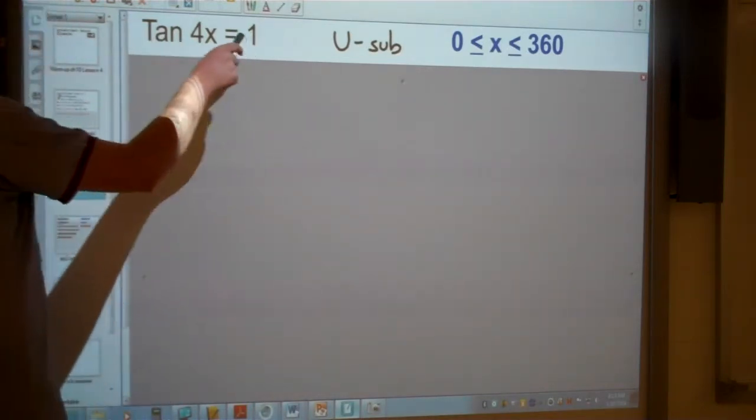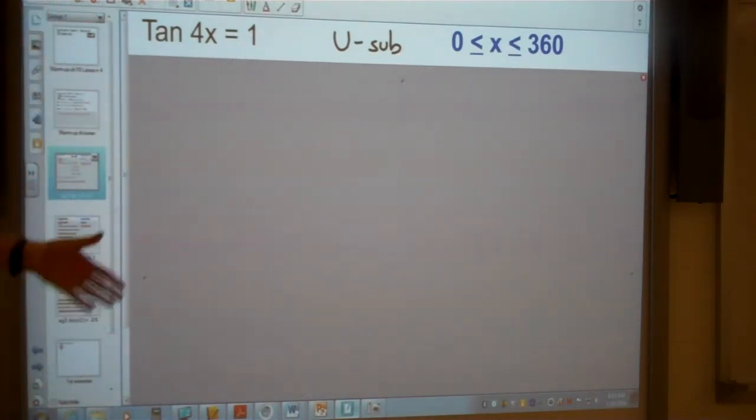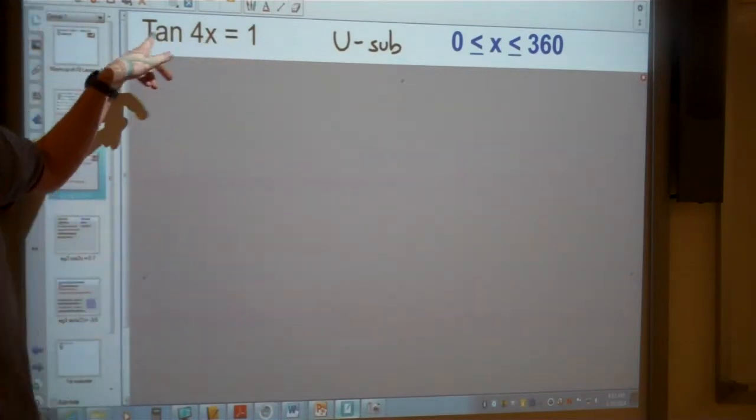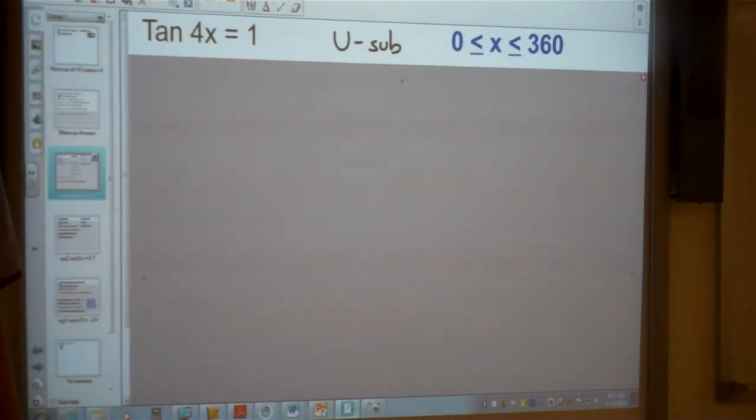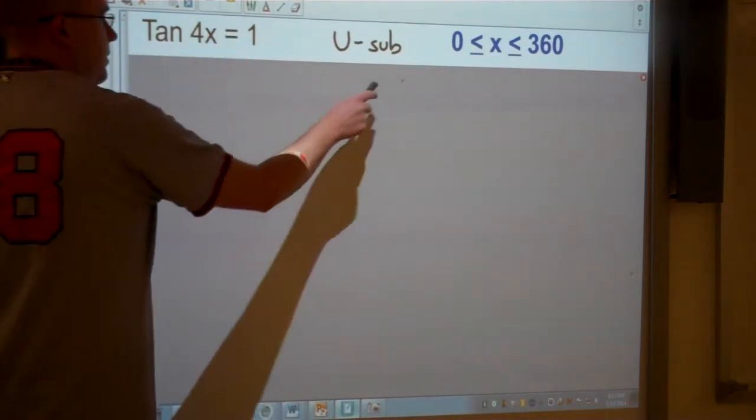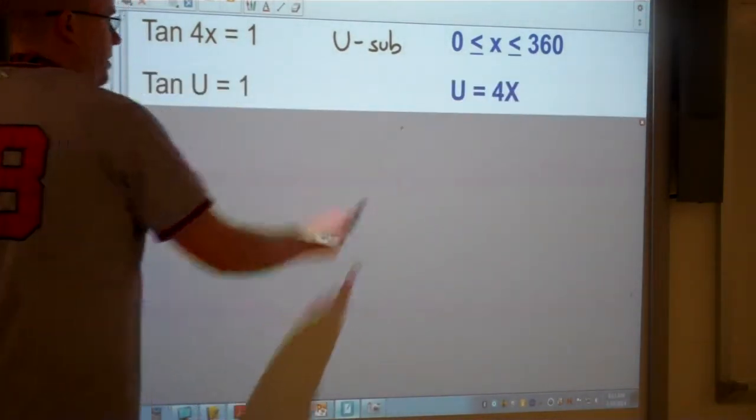So what we're actually going to do is, rather than answer this question, because we're not really sure how to answer this yet, and also we don't really know what that graph looks like yet. Transformations of graphs we're going to look at next lesson. So instead of putting in tan 4x, I'm just going to put tan U.